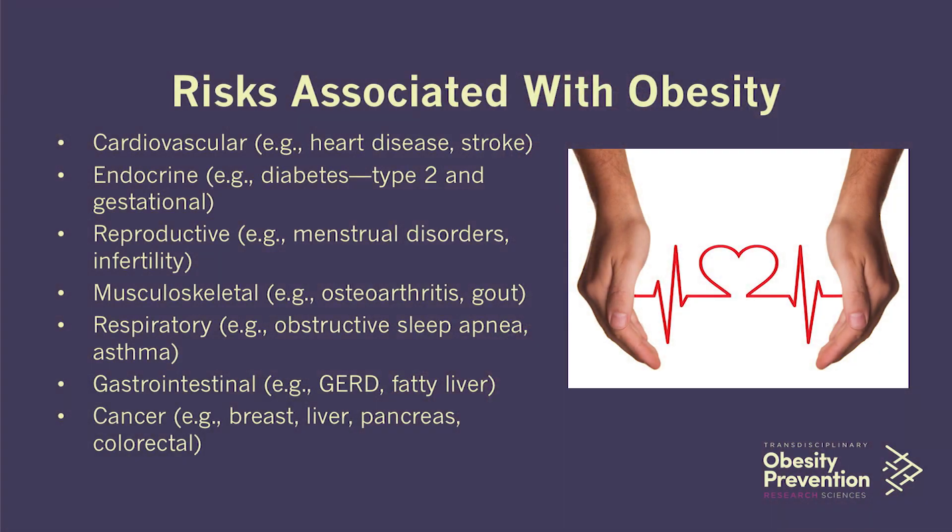There are many diseases that have been shown to be a consequence of obesity. The relationship between obesity and type 2 diabetes is the most studied and understood. However, obesity can negatively impact most of the physiological systems in the body, including the cardiovascular system, causing heart disease and stroke; the endocrine system, causing diabetes; the reproductive system, causing menstrual disorders and infertility; the musculoskeletal system, causing osteoarthritis and gout; the respiratory system, causing sleep apnea and asthma; and the gastrointestinal system, causing fatty liver and reflux disease.